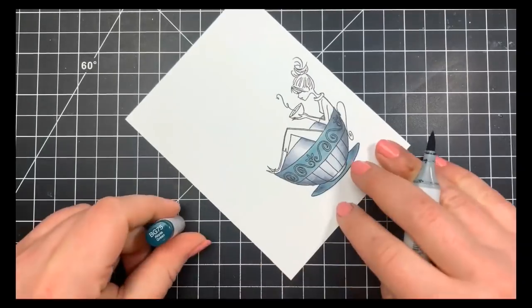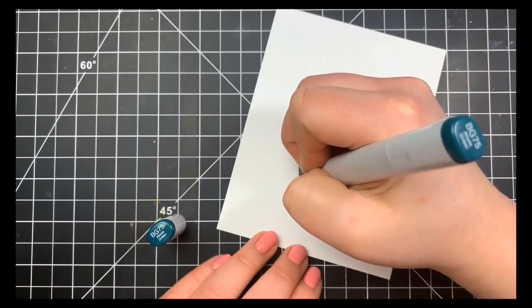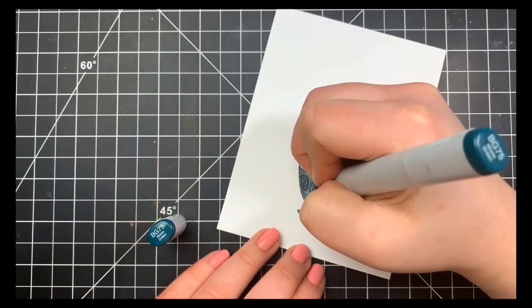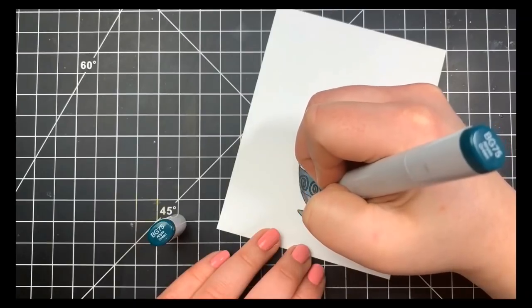So you don't have to worry about doing any other shading with the BG markers—just that one color is fine. I will take the BG75 and I'm just going to go through these little squiggly lines or designs that are on the cup.